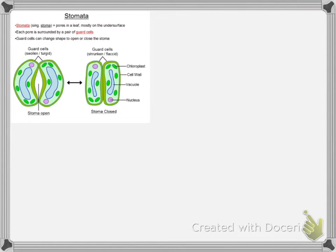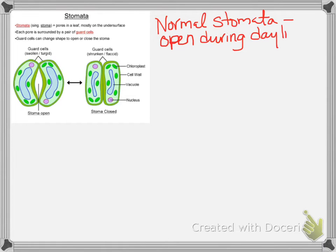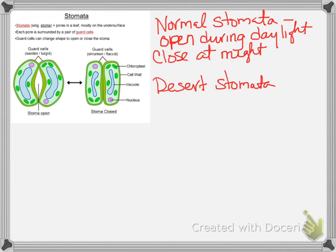Remember when we talked about photosynthesis and leaf structure? The stomata normally opens during the day and closes at night. It lets water in and out when it opens, and then it closes at night to keep water in when there's no photosynthesis because there's no sunlight.